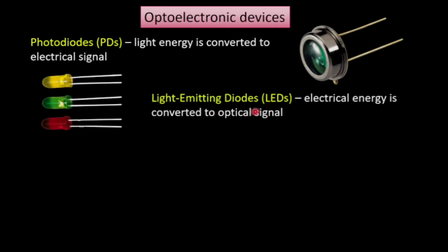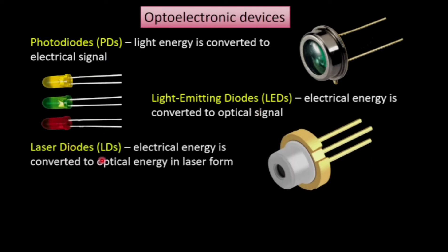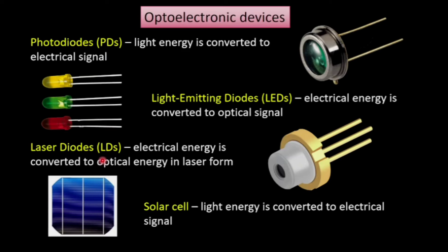The next one is the light emitting diode, which converts electrical energy into optical energy — we will discuss it in detail in forthcoming lectures. The laser diode converts electrical energy into optical energy in the form of laser light. Finally, the solar cell converts light energy — specifically sunlight, which is available abundantly and free of cost — into electrical energy.